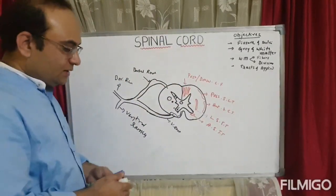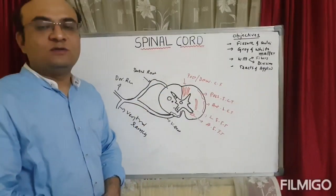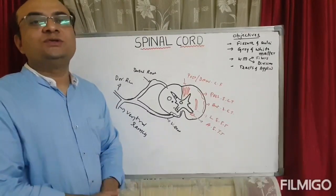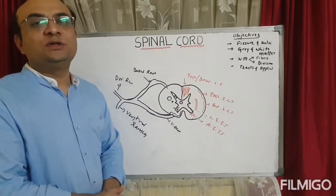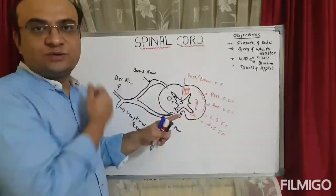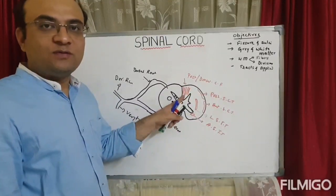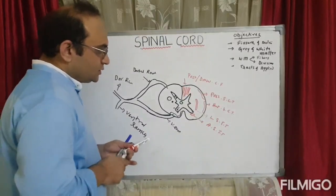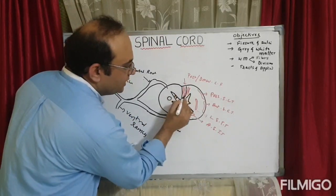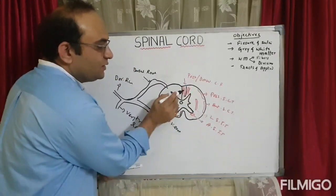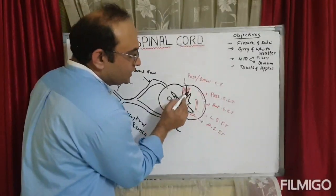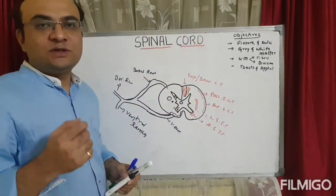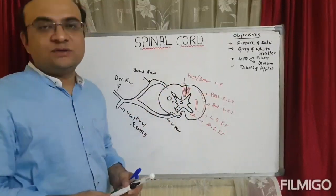The posterior column fibers, also called dorsal column fibers, carry pressure sensation, vibration, two-point discrimination, and conscious proprioception. They are divided into two groups: fasciculus gracilis (the most medial bundle) and fasciculus cuneatus (the lateral bundle).